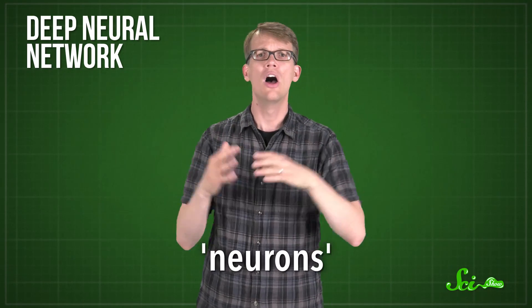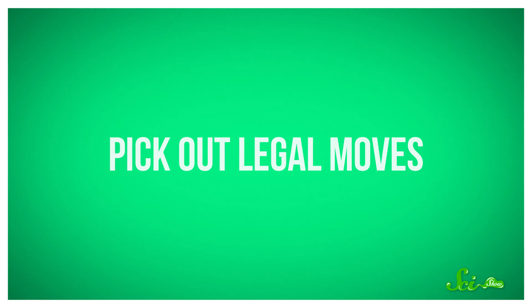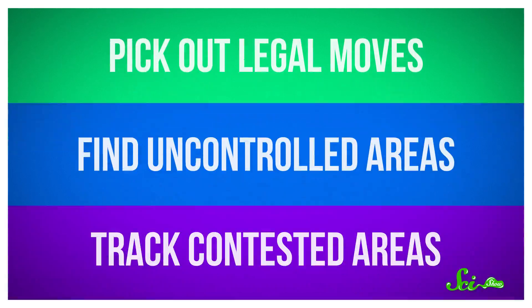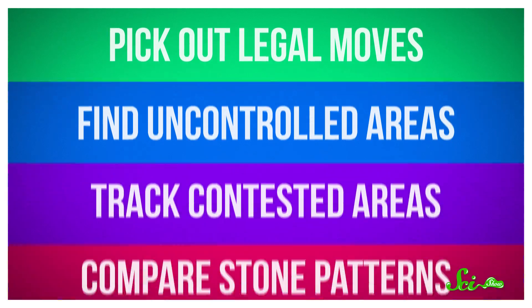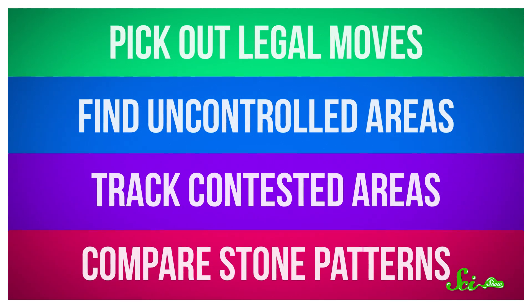A deep neural network is made up of layers of different computer systems called neurons, all stacked up on top of each other and running in parallel. This allows the network to analyze the same problem from multiple different angles at the same time. Each layer judges the same image by different criteria. So one layer will look at the picture of the Go board and pick out all of the legal moves. The next layer might examine the board for areas that aren't under anyone's control yet. The layer beneath that could be keeping track of how long it's been since either player has made a move in any particular region of the board. That tells the program which areas are currently being fought over and which ones might be safe to ignore for a while. A layer beneath that might be comparing the patterns of white and black stones to its internal database to see if anything happening on the board looks like anything it's seen before. And so on and so on.